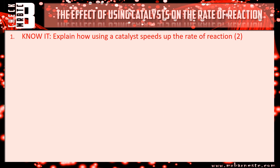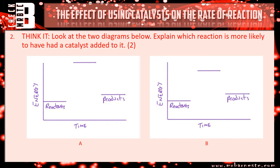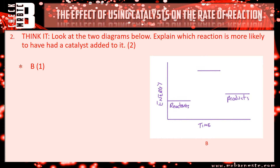Let's have a look at the answers. For question one — explain how using a catalyst speeds up the rate of reaction — it lowers the activation energy, that gets you the first mark. For the second mark you can say either that less energy is needed to start the reaction or break the bonds, or that more collisions are successful. For question two, the first mark is for saying which graph is most likely to have had a catalyst, which is B, because it has the lower activation energy — and that is your explanation.